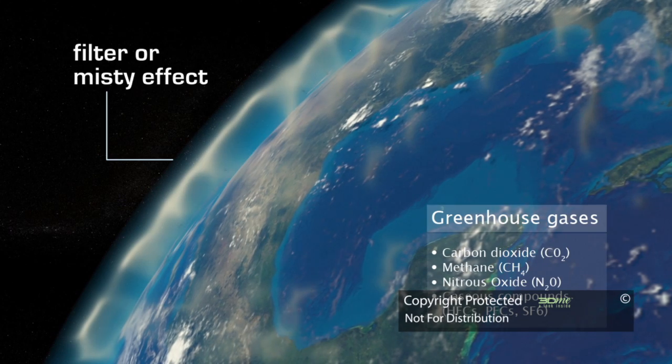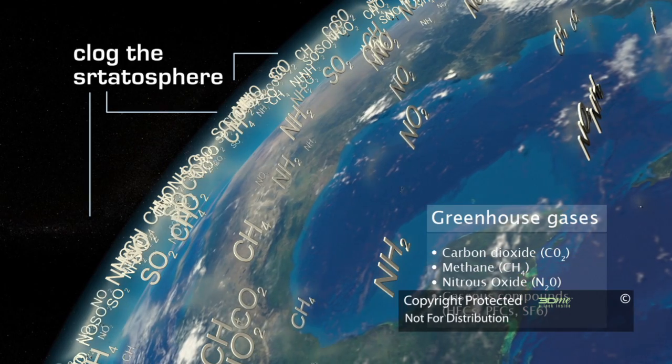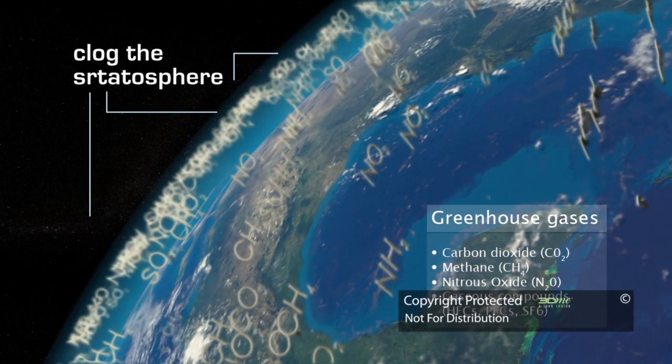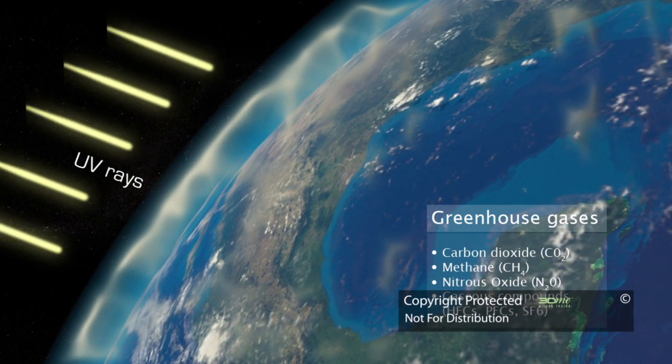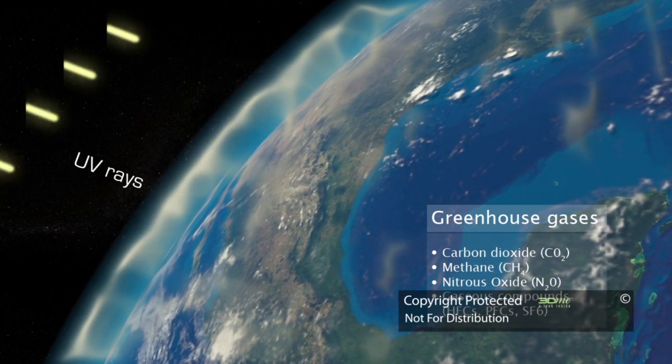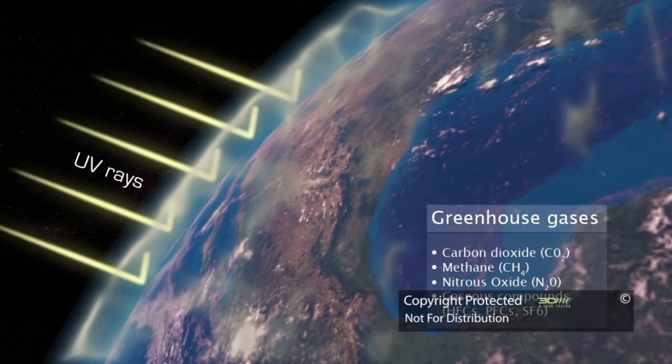As greenhouse gas emissions and air pollutants increase, they continue to clog the stratosphere and this all-important filtering system. This filter actually stops some of the sun's UV rays from escaping the earth's stratosphere, resulting in what we all now know as global warming.